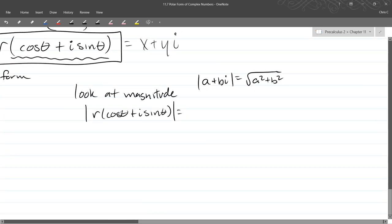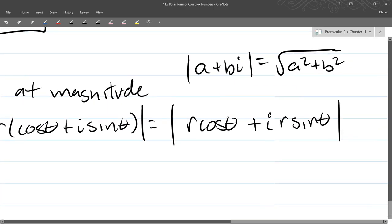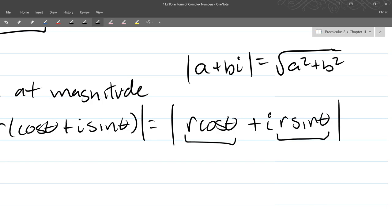All right, so as we know, I'm going to distribute the r across, so we're going to write it back as r cos theta plus i r sin theta. So how do we get the magnitude? We're going to square the coefficients. So I am underlining the coefficients, the real coefficient and the imaginary coefficient. So I'm just going to square those two, add them together. We're exactly doing the process described above right there.